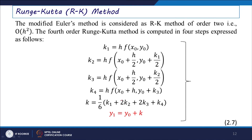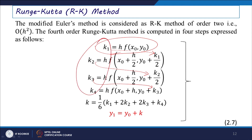The Runge-Kutta method is an improvement over the modified Euler's method. We consider different terms: K1 = H·F(X0, Y0), K2 = H·F(X0 + H/2, Y0 + K1/2), which improves on K1. Then K3 is an improvement on K2, and K4 is an improvement on K3. Taking the combination of all these terms gives the final improved value.